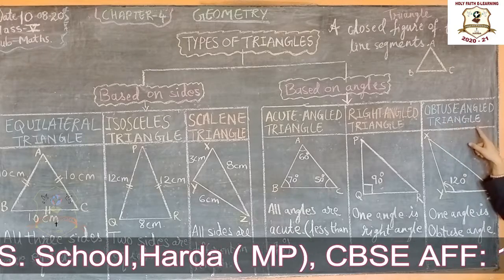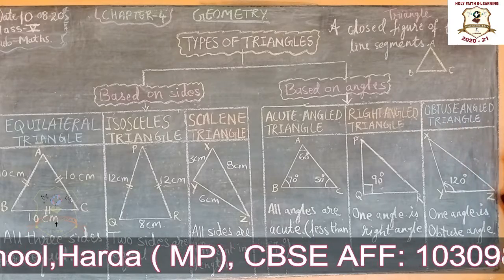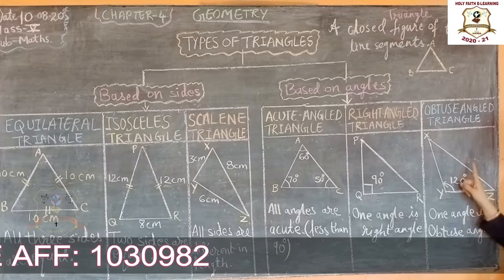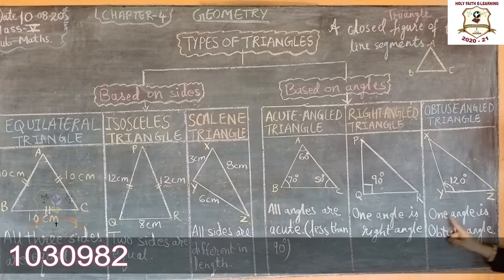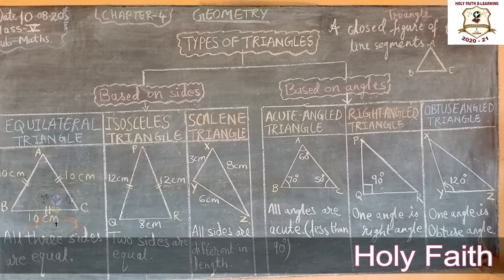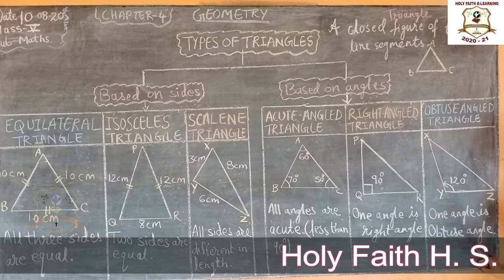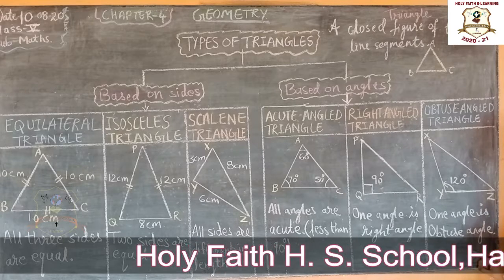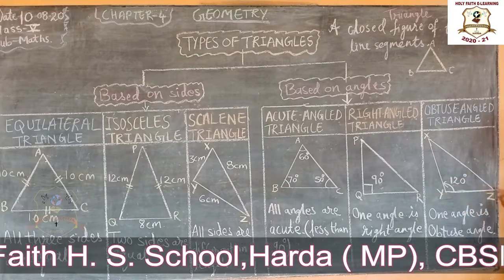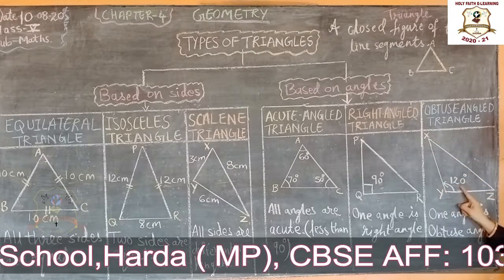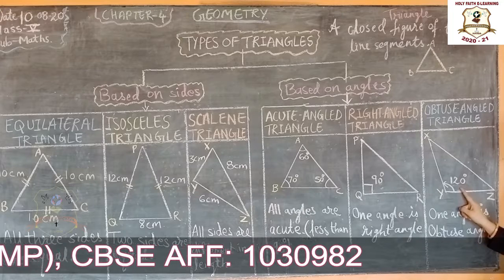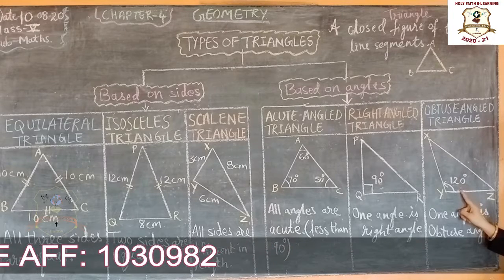Last is obtuse angle triangle. A triangle is called an obtuse angle triangle if its one angle is obtuse. Obtuse angle means more than 90 degrees but less than 180 degrees. Here, in triangle XYZ, angle Y is equal to 120 degrees, which is an obtuse angle. Understood?